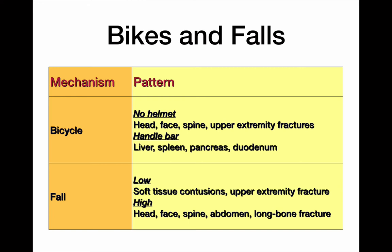With falls from a low height, it's similar to low-speed pedestrian versus car: soft tissue contusions and upper extremity fractures. From a significant height — and remember, significant is proportional to the child, so falling from over twice the child's own height — head, face, spine, and thoracoabdominal injuries are most likely. They're more likely to land on their feet and get long bone rather than calcaneal fractures, because the rest of the foot is soft enough to absorb some shock and project it into the long bones.